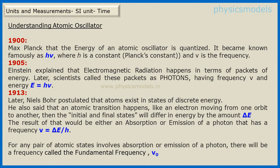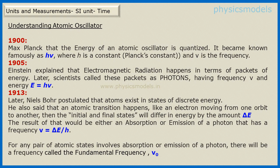Let's understand atomic oscillators and atomic transition. In 1900 Max Planck said that the energy of an atomic oscillator is in terms of quanta — that's how quantum mechanics came into play — and the energy of each quantum packet E is equal to hν, where H is Planck's constant and ν is the frequency. In 1905 Einstein explained that electromagnetic radiation also happens in terms of energy packets called photons, and again E equals hν. In 1913 Niels Bohr explained that atoms exist in states of discrete energy, not continuous. So from energy state one they can move to energy state two, and the delta E between these states is also equal to hν. Therefore ν equals delta E divided by H — this ν became called the fundamental frequency.